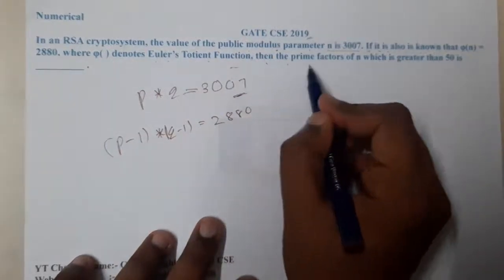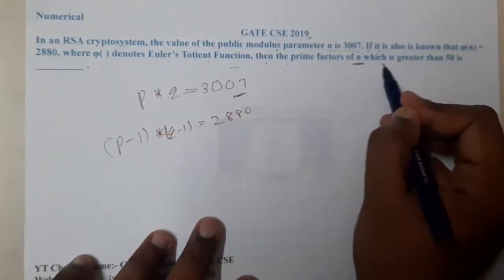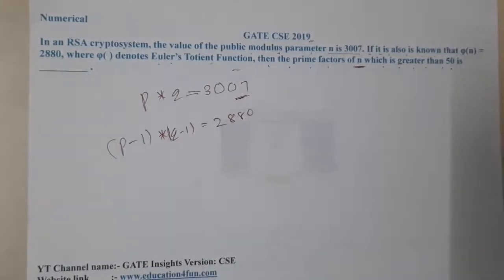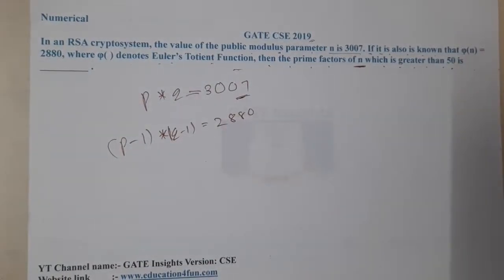Then the prime number of n which is greater than 50 is? So what they are asking: then the prime number of n which is greater than 50 is. We have two values right?